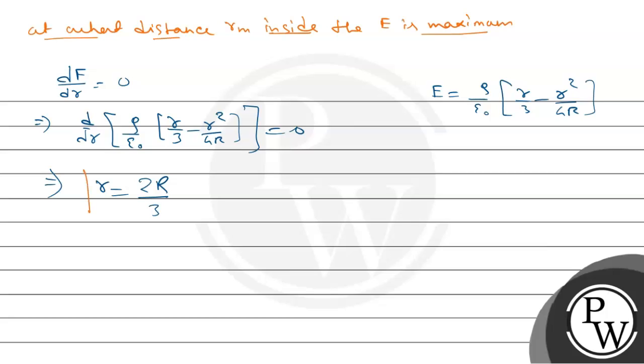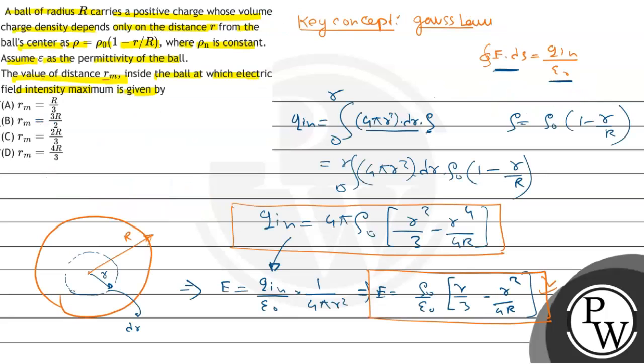So this is our final value, the distance R_m inside the ball at which electric field intensity is maximum. Our option C is correct, that is 2R/3, meaning at distance 2R/3 from center, the electric field will be maximum. Hope you understand the question, best of luck.